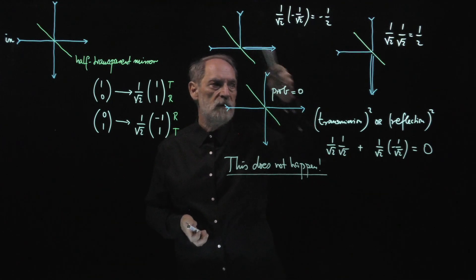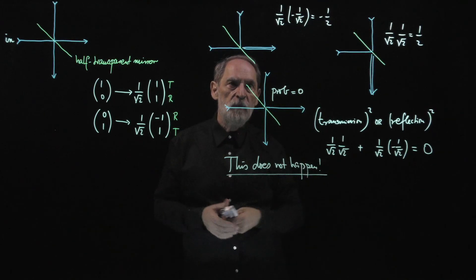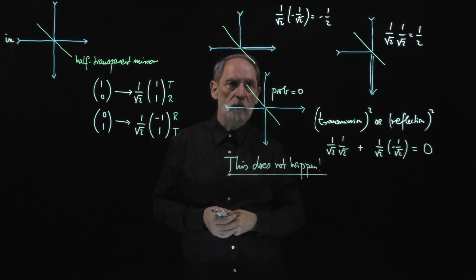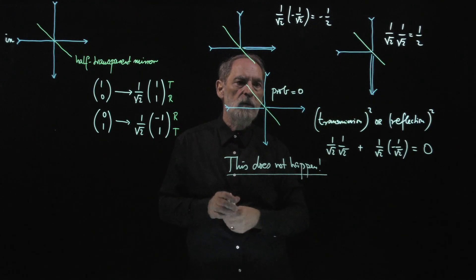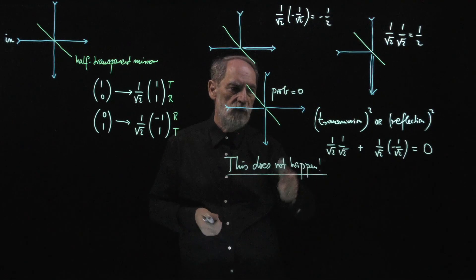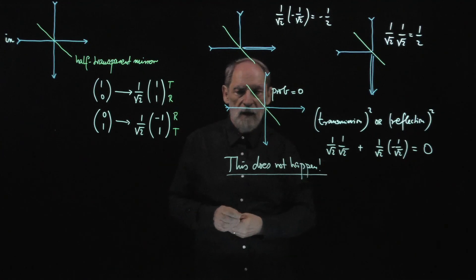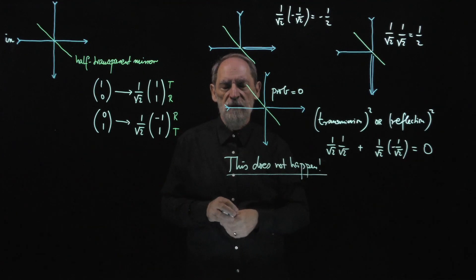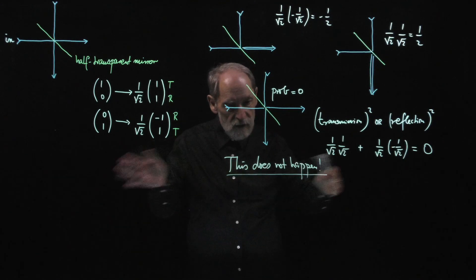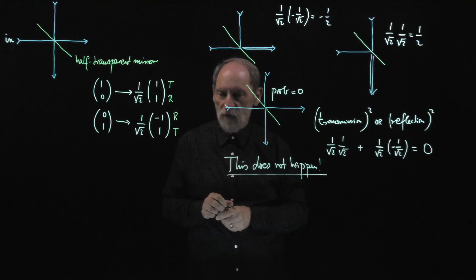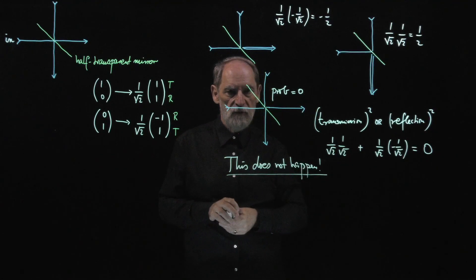What can happen is both photons coming out on the right, or both coming out at the bottom. If we do this experiment, we will always observe two photons coming out together — either both on the right or both at the bottom. We will never observe one photon coming out on the right and another at the bottom. This is a consequence of the fact that these photons are completely indistinguishable.